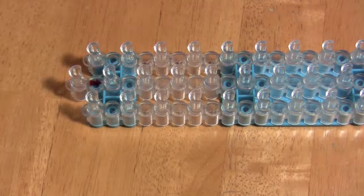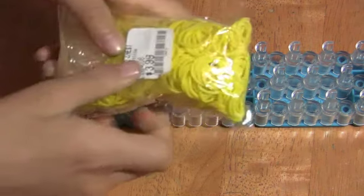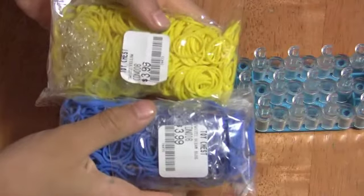Hi, I will be showing you how to make the minion bracelet. You will need a lot of yellow rubber bands and also a lot of blue ones. You can buy these at Toy Chest or Michaels.